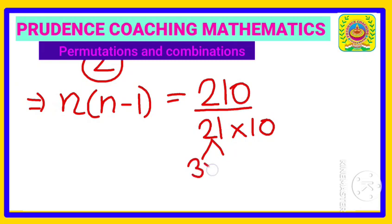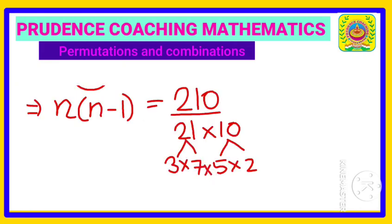21 can be written as 3 into 7, so write it as 3 into 7. 10 can be written as 5 into 2, so write it accordingly. Now multiply the two numbers and find out if you are getting this format. If we multiply 3 and 5, we are getting 15 multiplied by 7 into 2, that is 14.